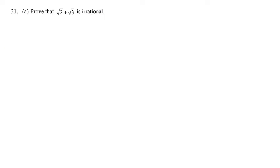Prove that root 2 plus root 3 is irrational. This is from the real numbers chapter. We already know that root 2 is an irrational number and root 3 is another irrational number, since they are square roots of prime numbers. Square roots of prime numbers are irrational numbers.